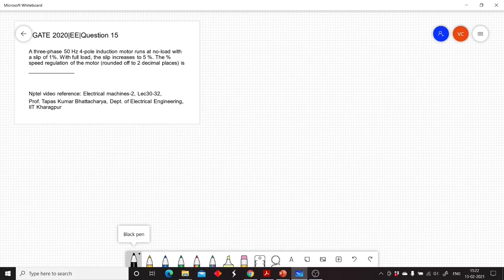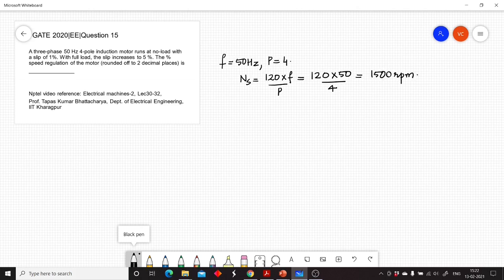The frequency of operation f is given as 50 hertz, the number of poles p equal to 4. So the synchronous speed Ns, which is equal to 120 into f by p, can be given as 120 into 50 by 4, which turns out to be 1500 rpm.